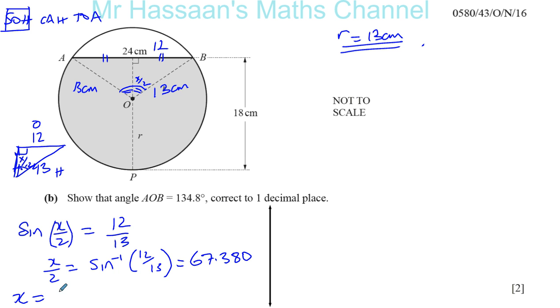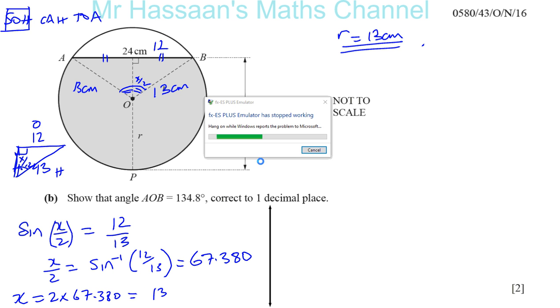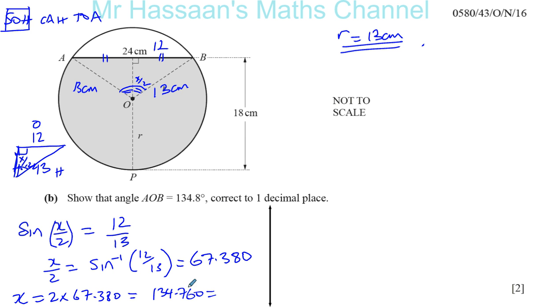And our X is going to be twice that. That's X over 2. So it's 2 times 67.380. Notice I've written it to more than one decimal place, because you have to show that it rounds to one decimal place. You'd always do that, leave it to more than what you require for the final part of the question. Multiply by 2, that gives me 134.760, which if you round it to one decimal place gives you 134.8 degrees as required in the question.